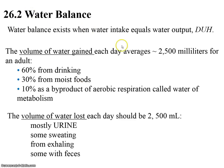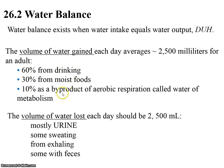Water balance exists when water intake equals water output. I keep track of what I drink — I have a couple of bottles that I know I go through, so I have a broad idea. But I certainly don't track my output. What are the ways that we gain and lose? I track what I drink, but I don't track what I get from foods, and I certainly can't track what I get from aerobic respiration — what's called the water metabolism.